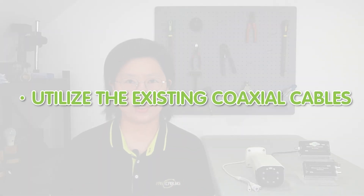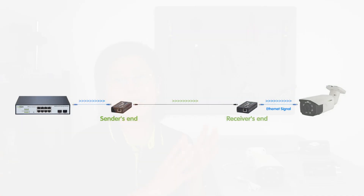Let's see how it works. First, the Ethernet over coax extenders utilize the existing coaxial cables that are already hidden within the walls of buildings. These cables, commonly used for television signals, are repurposed to carry data signals. At the sender's end, the extender device takes your Ethernet signal and transforms it into a format compatible with coaxial cable. This newly formatted signal then travels through the existing coaxial cable infrastructure, reaching the receiver's end.